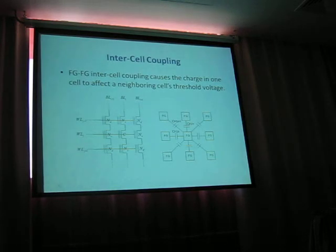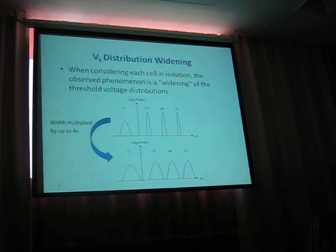The floating gate to floating gate intercell coupling, often referred to as intercell interference, causes the charge in one cell to affect the neighboring cell's threshold voltage. When examining each cell in isolation, the observed phenomenon is a widening of the threshold voltage distributions. Here in this example, you can see why it's multiplied by up to 4x.